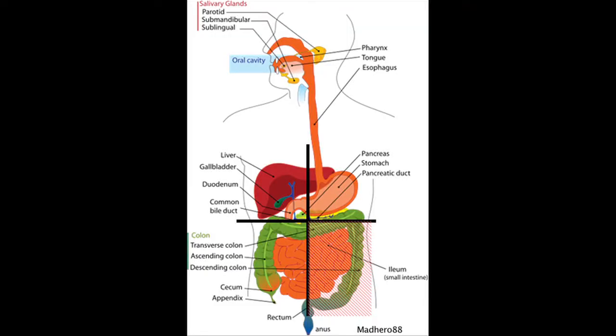The lower left quadrant holds a couple of major organs. First, you have your small intestine — part of it, not the whole thing. Your small intestine is really where the vast majority of digestion happens.